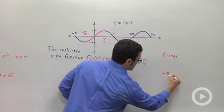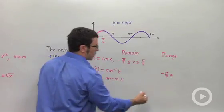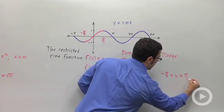So I'll write that down here. Negative pi over 2 is less than or equal to—I'll call it y—is less than or equal to pi over 2.